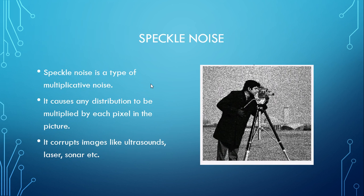Speckle noise is a type of multiplicative noise. It causes a distribution to be multiplied by each pixel in the picture. It corrupts images like ultrasounds, laser, sonar, etc.